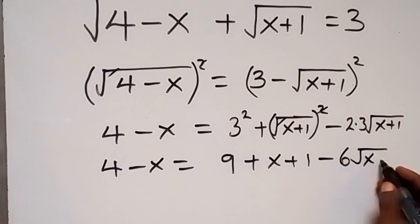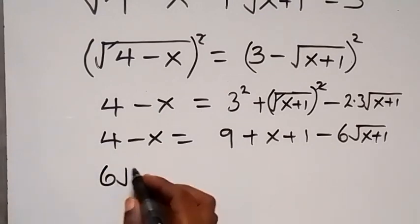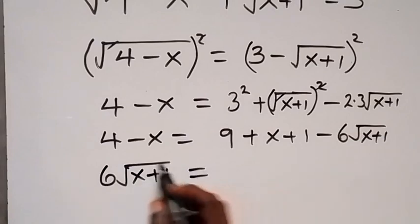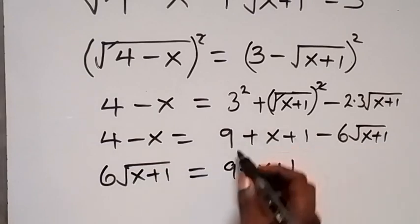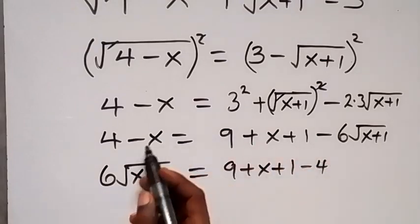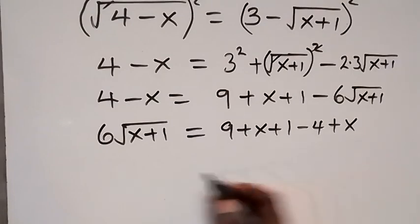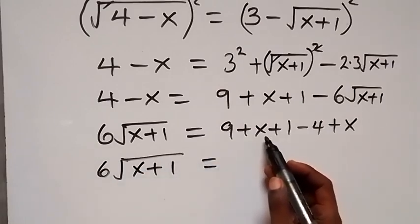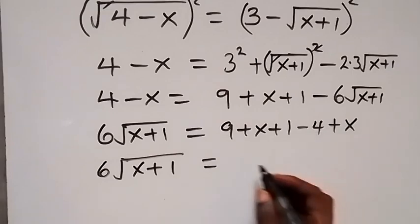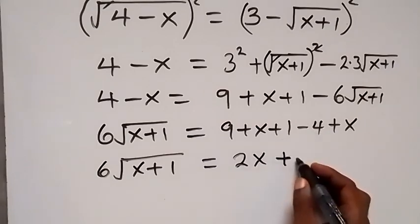In the next step, let's take minus 6 root(x plus 1) to the other side — it becomes plus 6 root(x plus 1). Then we take everything else to that side: 9 plus x plus 1 minus 4 plus x. Adding like terms, we have 6 root(x plus 1) equals 2x plus 6.